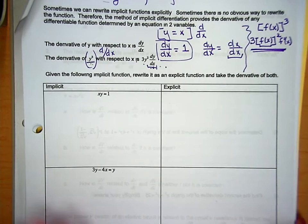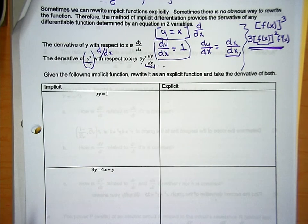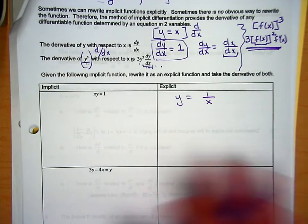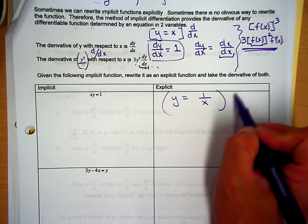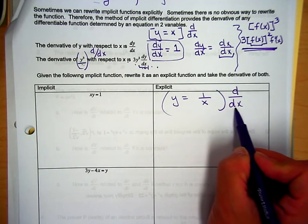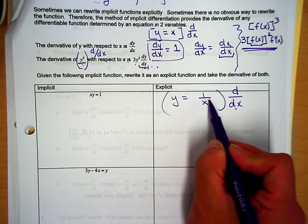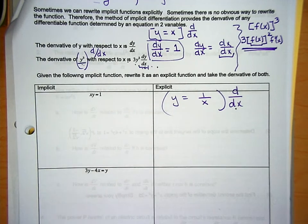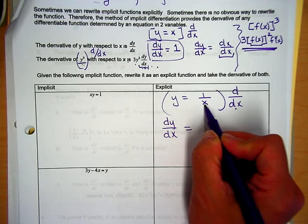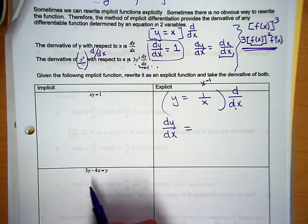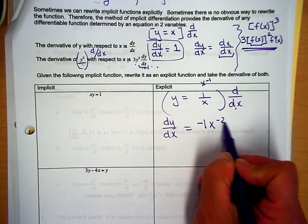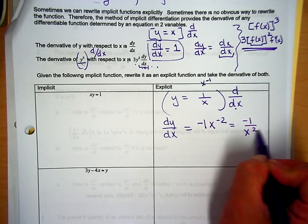Here's an implicit function: xy = 1. I can write this explicitly by solving for y: y equals 1 over x. If I take the derivative of y with respect to x, the derivative of 1/x — remember this is really x to the negative 1 — bring down the negative 1, reduce the power by 1, and if you simplify it, we get the explicit derivative.